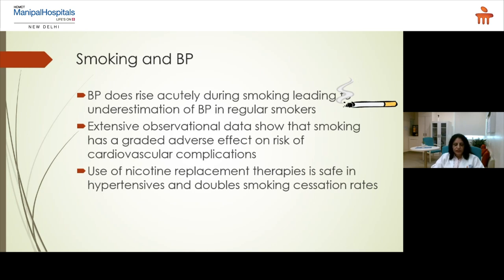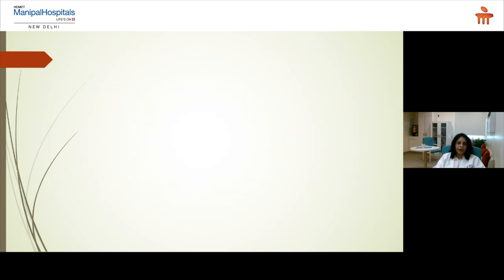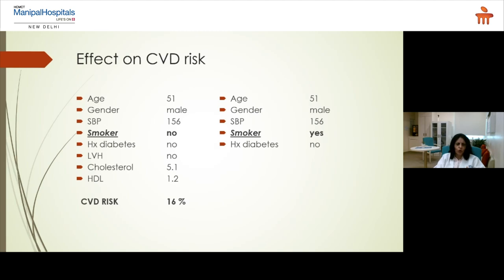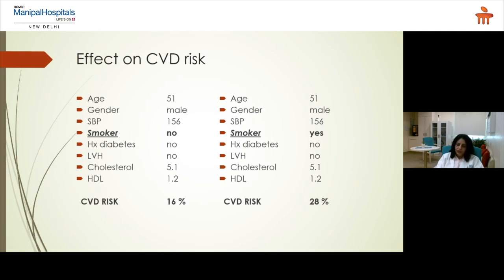Another important vice is smoking. If I compare two people of similar age and similar lipid profiles, with the only difference being one is a smoker and the other is not — the cardiovascular risk more than doubles for the smoker. Such is the tremendous effect of smoking on cardiovascular disease.